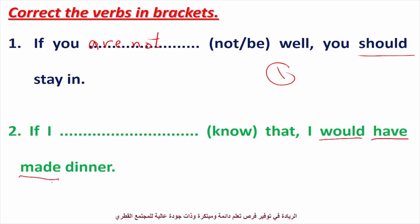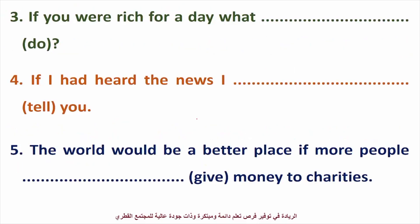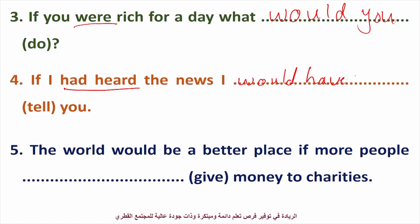That last one is third conditional — 'if I had known' uses past perfect. Next: 'If you were rich for a day, what would you do?' — that's type two. Number four: 'If I had heard the news, I would have told you.' That is third conditional. Number five: 'The world would be a better place if more people gave money to charities.' The verb 'give' should be 'gave' — past simple — type two.